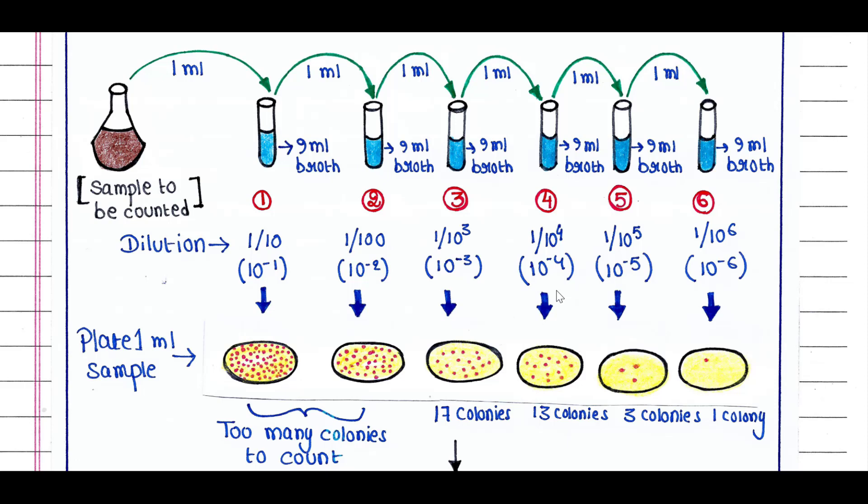Again, we will take 1 ml culture from tube 4 and put it in 9 ml broth in tube 5. That means the dilution is 10 to the power minus 5.